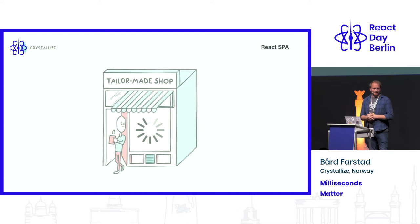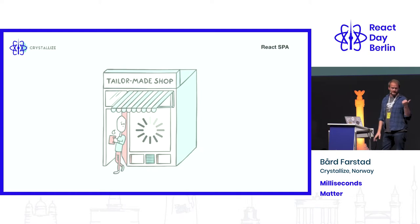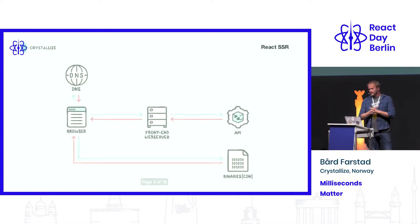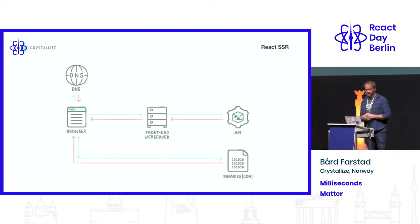Then you have this nice spinning loader, especially on slow connections where you have to load the JavaScript. All sorts of things happen, so you don't want that. And also, this is what Google would see — the search engines. So basically you then step into: okay, let's do SSR.